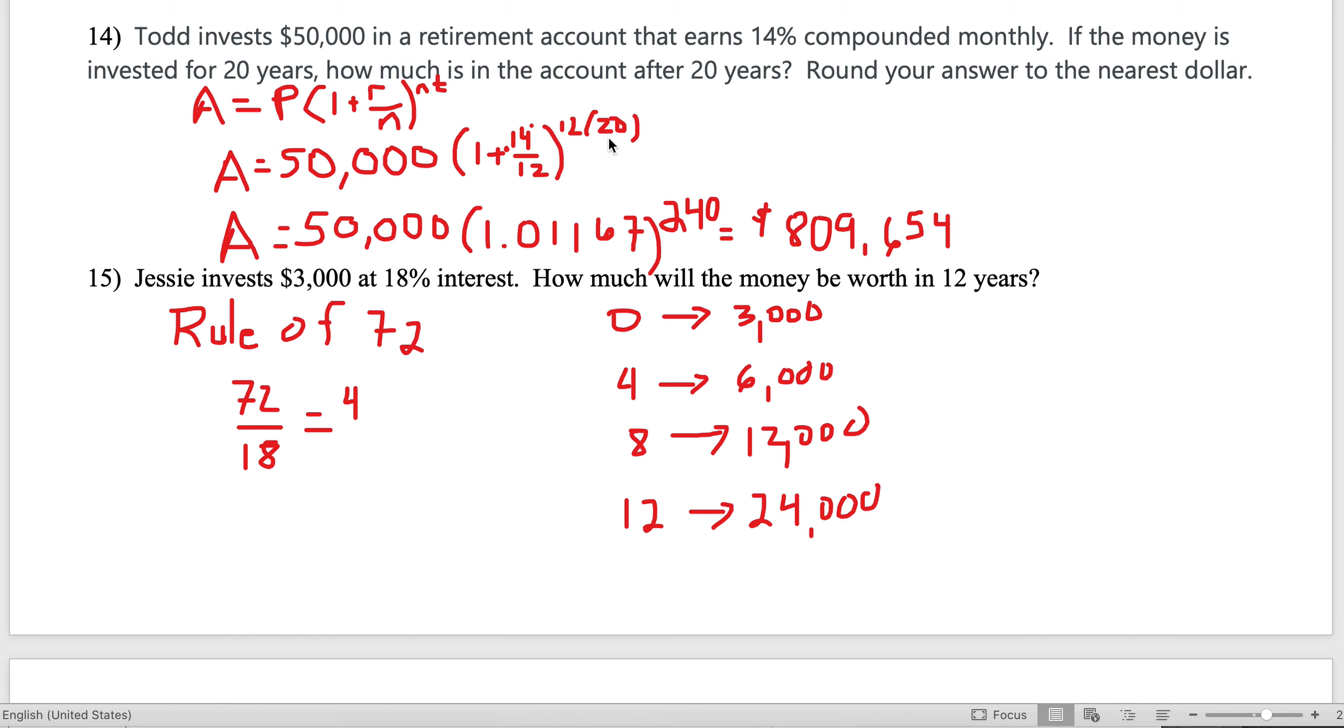This formula can compound by the month, by the week, semi-annually, by the day. The one thing it doesn't do is compound continuously, but we don't cover that in this class. The amount will be $50,000 times (1 + 0.14/12)^(12×20). 12 times 20 is 240.